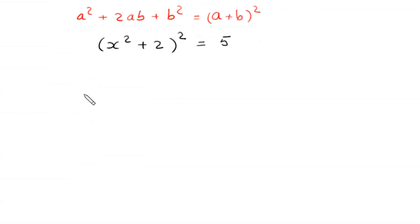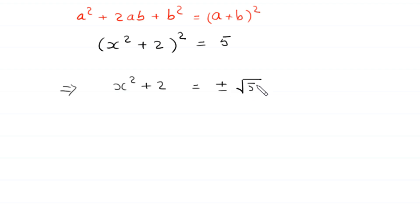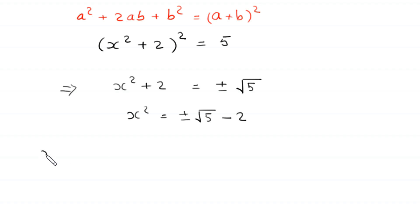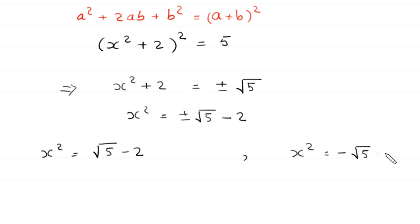Taking the square root of both sides: x² + 2 = ±√5. Moving +2 to the right: x² = ±√5 - 2. So x² = √5 - 2 (positive case) or x² = -√5 - 2 (negative case).